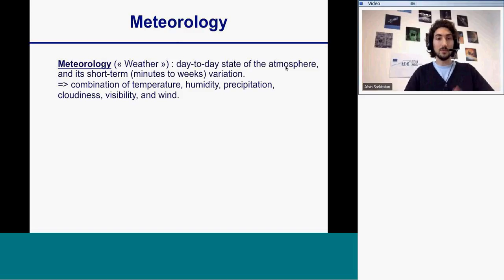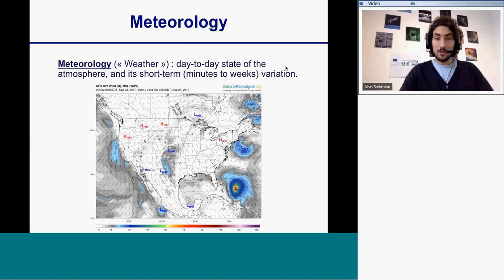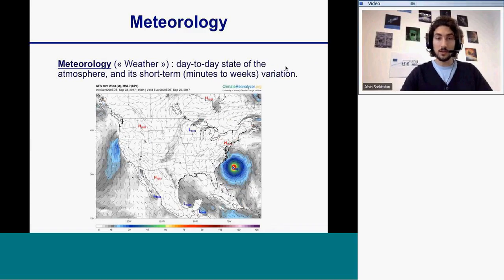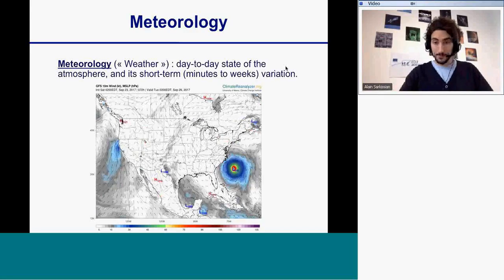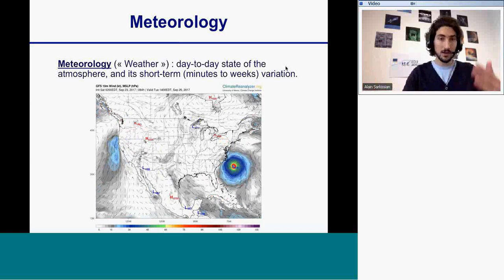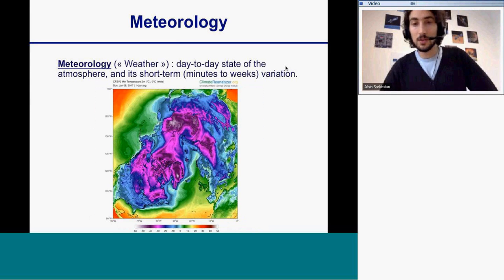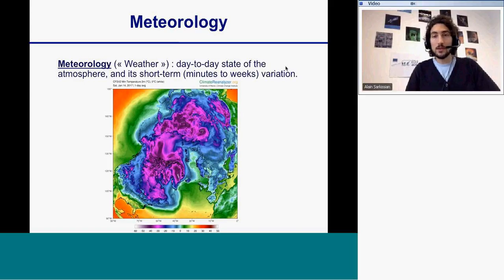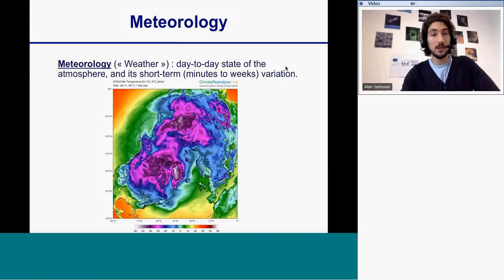First I will briefly introduce what meteorology is, explaining that it's what we call the weather — the day-to-day state of the atmosphere, a short-term variation. I will give some animations showing the wind at 10 meters and the pressure to briefly illustrate this variation. Here is another animation showing the day-to-day variation of air temperature at 2 meters for the northern hemisphere.